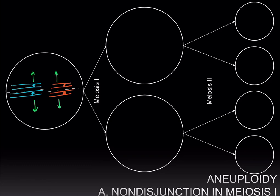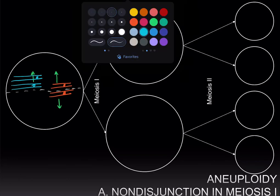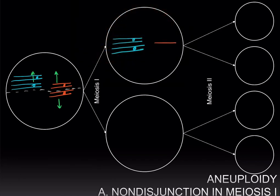However, in non-disjunction, if one of these pairs of chromosomes fails to separate or segregate, you end up with both the non-sister chromatids on the same side. This results in one daughter cell having two non-sister chromatids and the other daughter cell not having any non-sister chromatids for that particular chromosome.